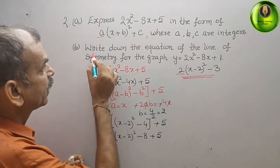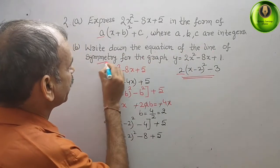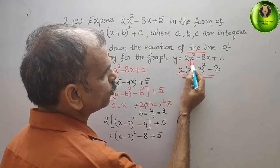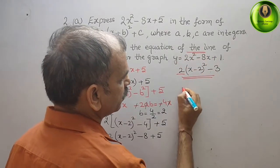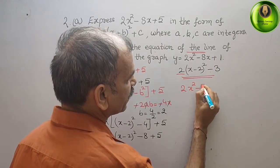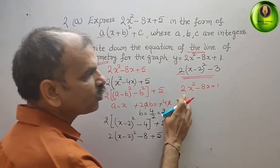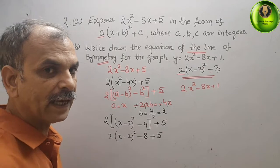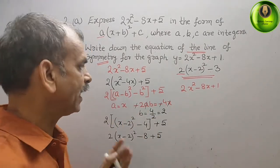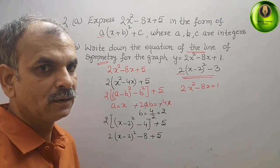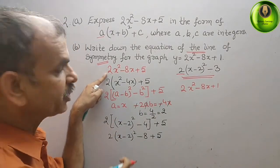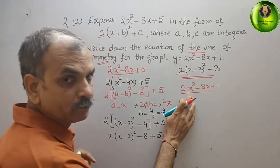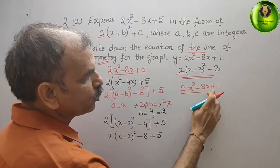Now for part b, they have asked you to write down the equation of the line of symmetry for y equals 2x² minus 8x plus 1. We have to write this in symmetry form, meaning in bracket form only. You can see our expression was 2x² minus 8x, and here it is also 2x² minus 8x — the same, except plus 5 is now plus 1.